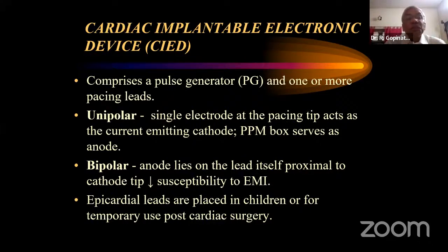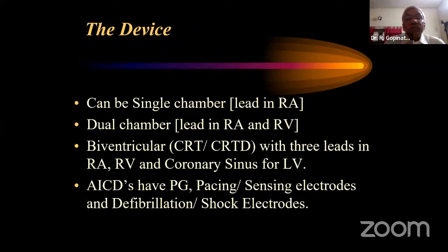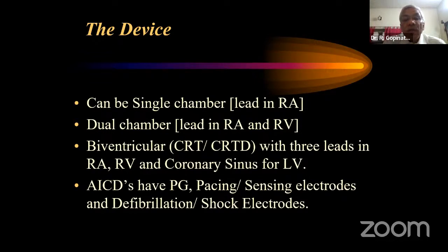Bipolar leads are more commonly used in permanent devices, while unipolar is used in temporary settings — such as transvenous pacing after an MI or epicardial leads placed in children post cardiac surgery. Regarding chamber configuration, a single-chamber device has the lead only in the right atrium, since that is where the conduction system arises. A dual-chamber device has leads in both the right atrium and right ventricle, providing control over conduction and synchronicity between the two chambers.